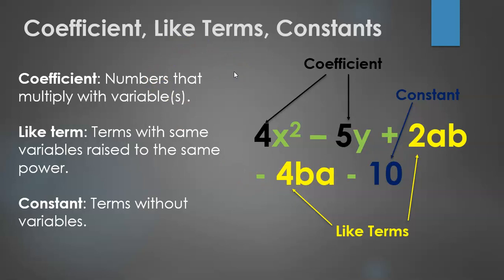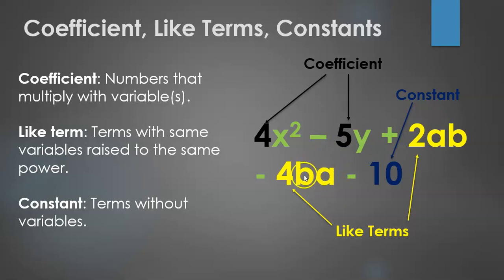Like terms are the terms with the same variables raised to the same power. Here, 2ab and minus 4ba are like terms — a is raised to the power 1 and b is raised to the power 1 in both. Constants are terms without any variables associated with them, so minus 10 becomes a constant in this scenario.